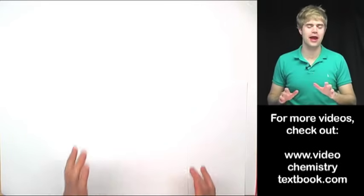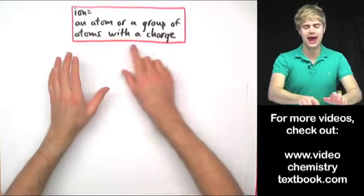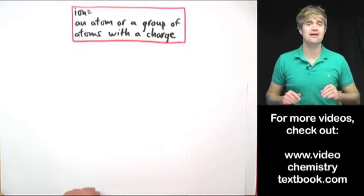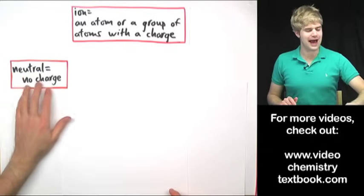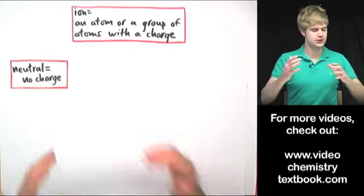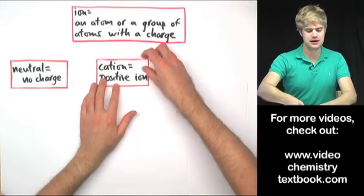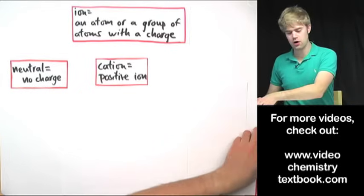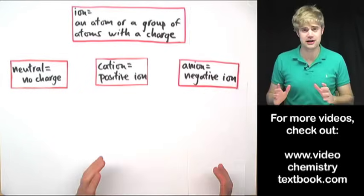Okay, here's just a little bit of vocabulary for review. So an ion is an atom or a group of atoms that have a charge. Now it's possible for an atom to be neutral which means it has no charge, means it's not an ion. But if something is an ion it can be either a cation which is what we call a positive ion, or it can be an anion which is a negative ion.